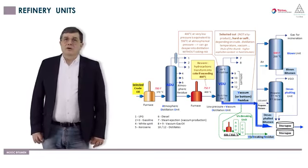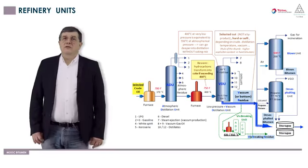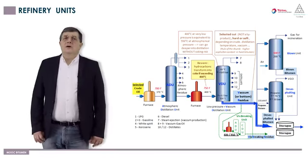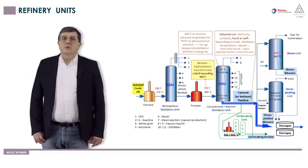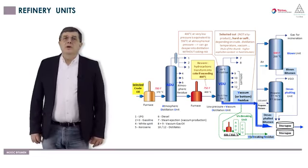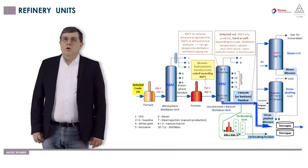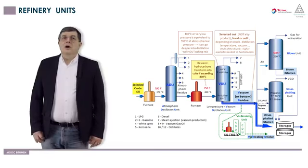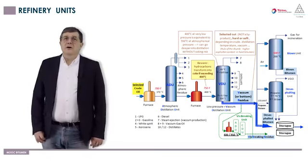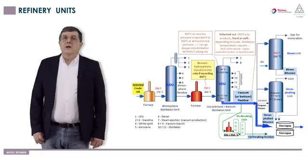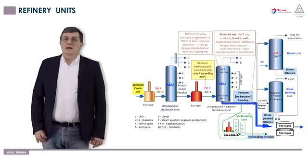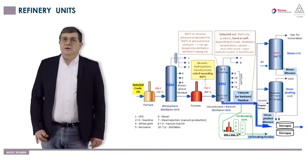Atmospheric column bottom is reheated around 400 Celsius degrees to enter a vacuum column, that is a liquid-gas separation. We use a vacuum tower with low or very low pressure because hydrocarbons begin cooking over 400 Celsius degrees, whatever the pressure is. But combining 400 Celsius degrees with a low or very low pressure gives, without cooking, an equivalent of 550 Celsius degrees atmospheric distillation.